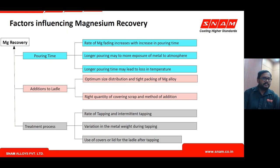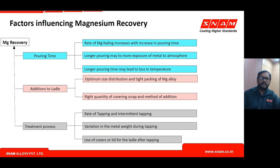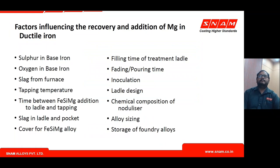The treatment process itself matters: the tapping rate and liquid metal height maintained over the alloy chamber determine treatment efficiency. More liquid metal over the alloy ensures magnesium vapor doesn't escape — the vapor is retained inside and mixes by itself. As dissolution happens from the bottom, magnesium vapor moves upward and is stopped by the liquid metal above, mixing throughout.